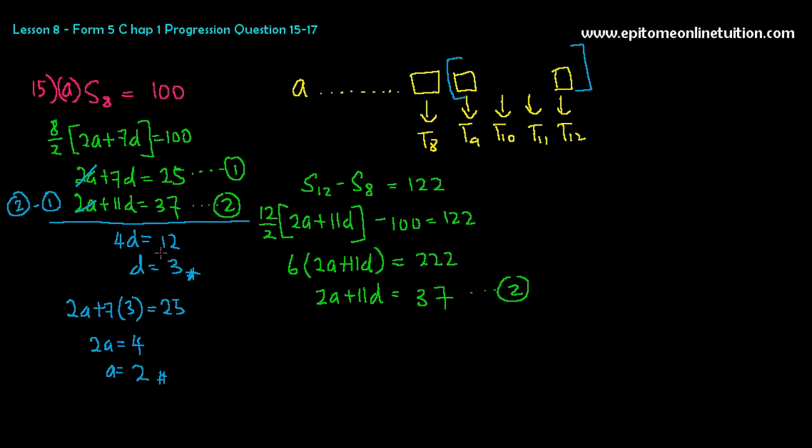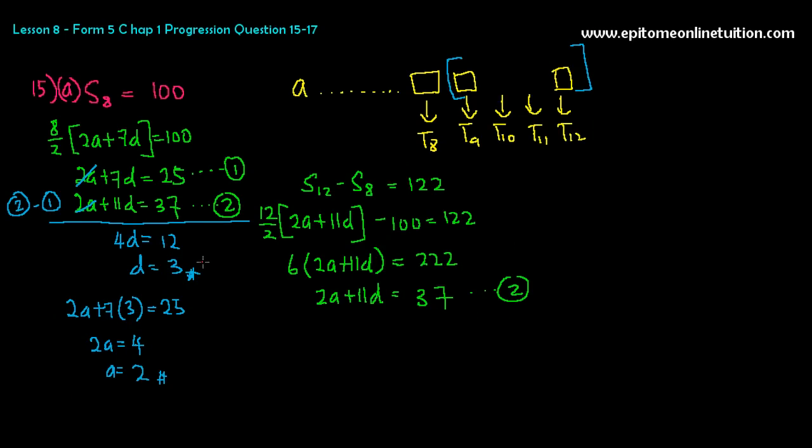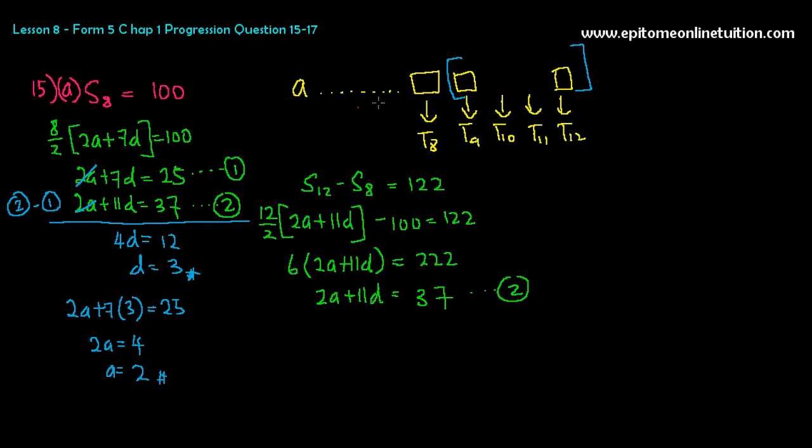And 15B says find the first 5 terms of the progression. The first 5 terms. You're supposed to look for T1, T2, T3, T4, T5. Just list them out. You're not adding. Not the sum. Find the first 5 terms. So that's fairly easy. I'm going to write it over here. 15B. The first term is 2. And what is the D? The D is 3. So just add 3 to it. So that's 5. Add 3 to it is 8. Add 3 to it is 11 and 14. That's it. The first 5 terms. Simple for 15.